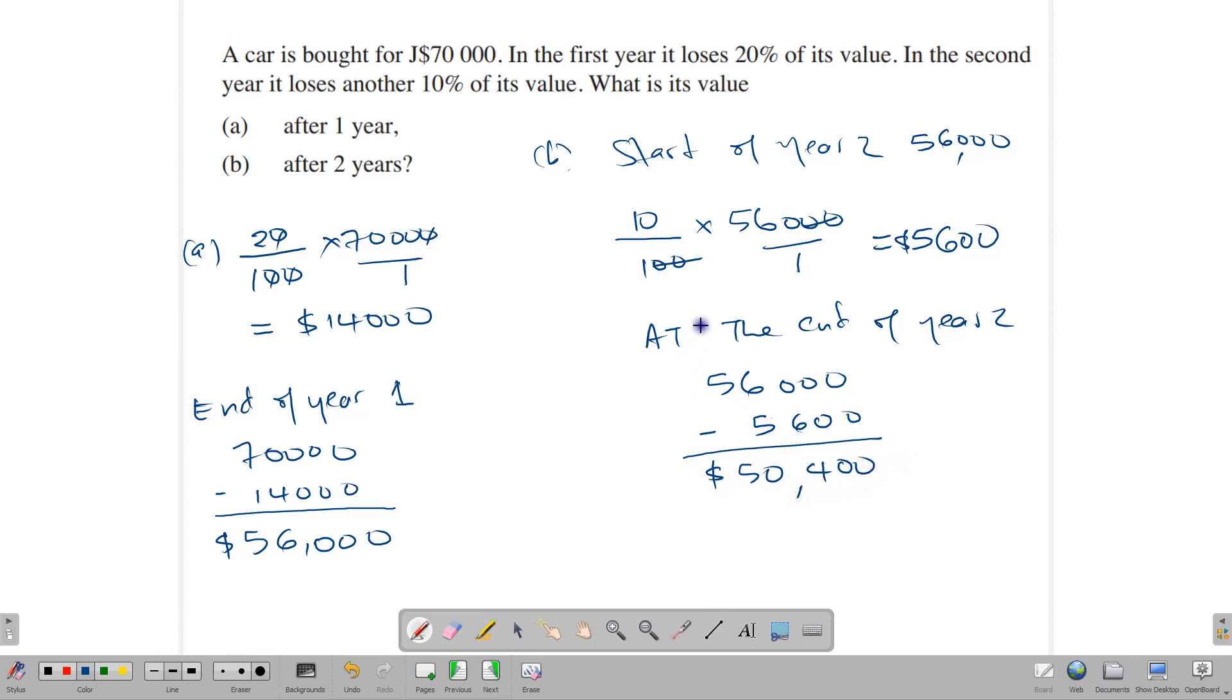So this method is based on the reducing balance idea. But instead of using a single rate percentage, it's using different percentages for different years. This is how we go about calculating depreciation, whether you're using the linear method, where it loses the same amount every year, the reduced balance method where it loses the same percentage every year, or a system where it loses a different percentage for each year of its usable life.